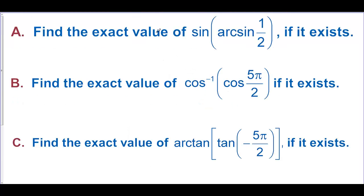Find the exact value of sine of arc sine of one half. We want to know where sine equals one half, and that is at pi over 6. Then the sine of pi over 6 is one half. So these two cancel each other out — they are inverse functions.